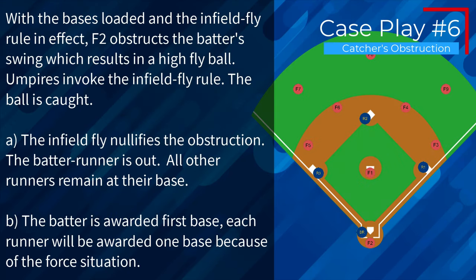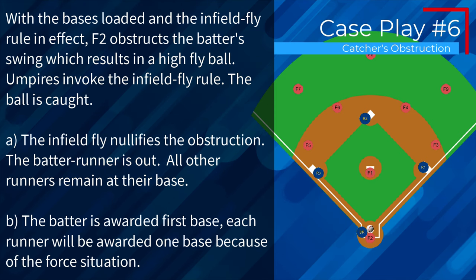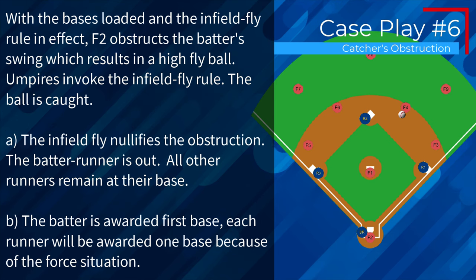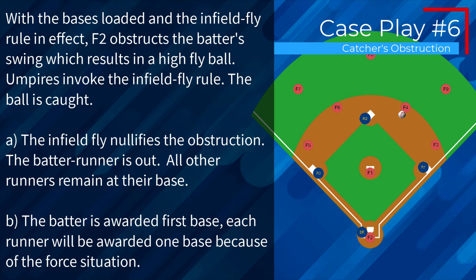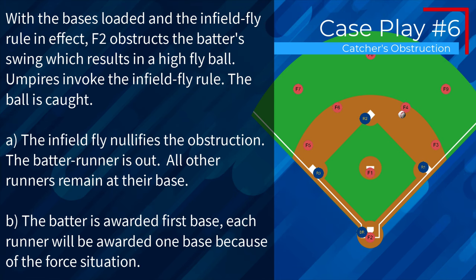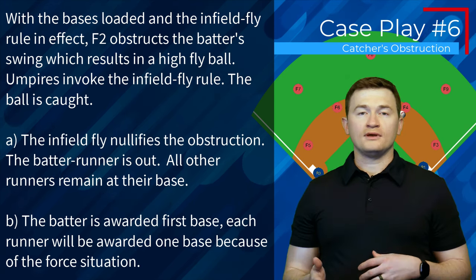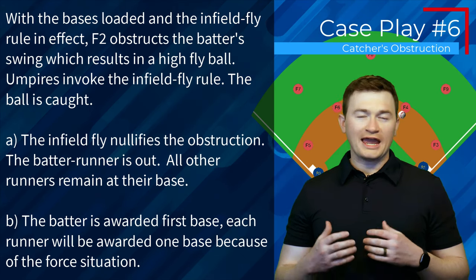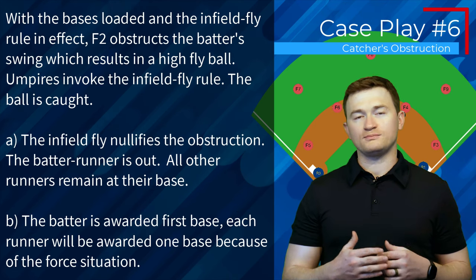Case play number six. With the bases loaded and the infield fly rule in effect, F2 obstructs the batter's swing, which results in a high fly ball. Umpires invoke the infield fly rule. The ball is caught. Is this A, the infield fly nullifies the obstruction — the batter runner is out and all other runners remain at their base; or B, the batter is awarded first base and each runner will be awarded one base because of the force situation? The correct answer is B — the obstruction is going to be enforced, meaning we'll award the batter runner first base and all other runners will be awarded another base because of the batter becoming a runner.